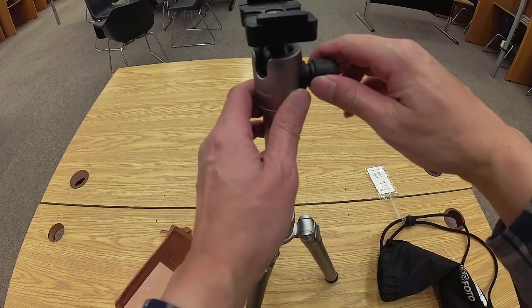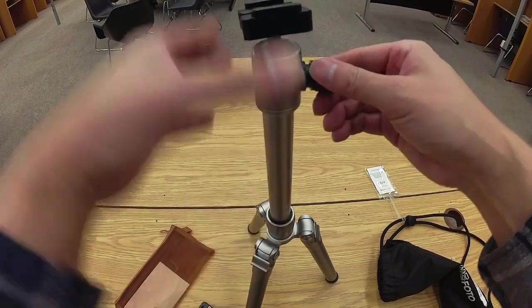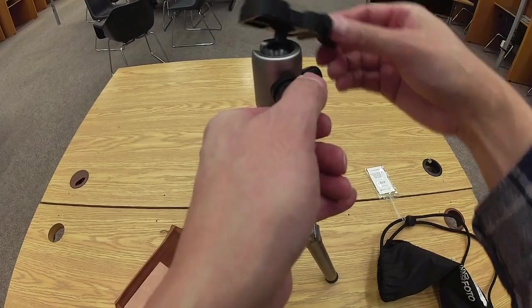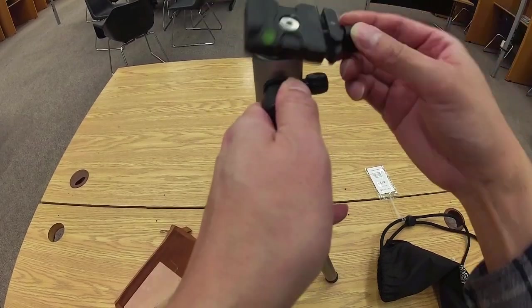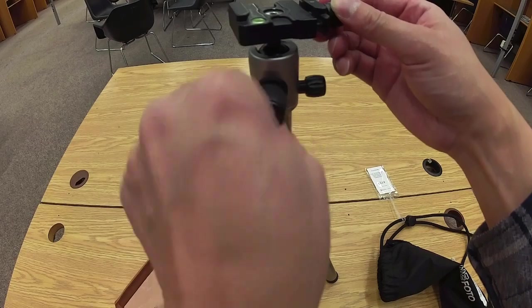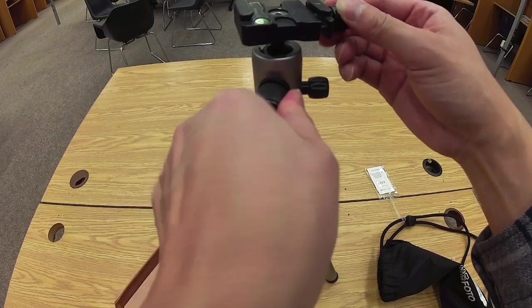So this bigger knob here, tighten or loosen. If you loosen it, that allows you to move the ball head around, up and down. And if you want to keep it in place, you just tighten the screw.